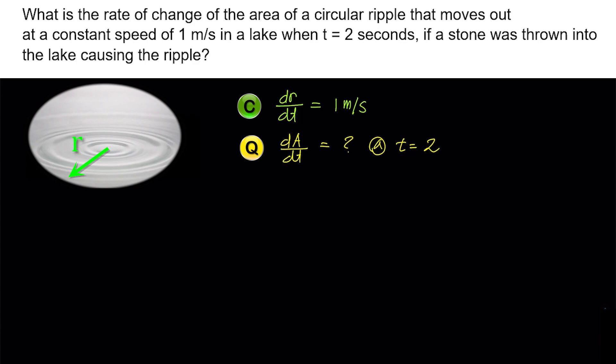Thirdly, let's find a relation that connects the given condition and the question. The variable in the condition is r, while the variable in the question is A. The way to connect these two variables is through the formula for the area of a circle, which is A equals π r squared.